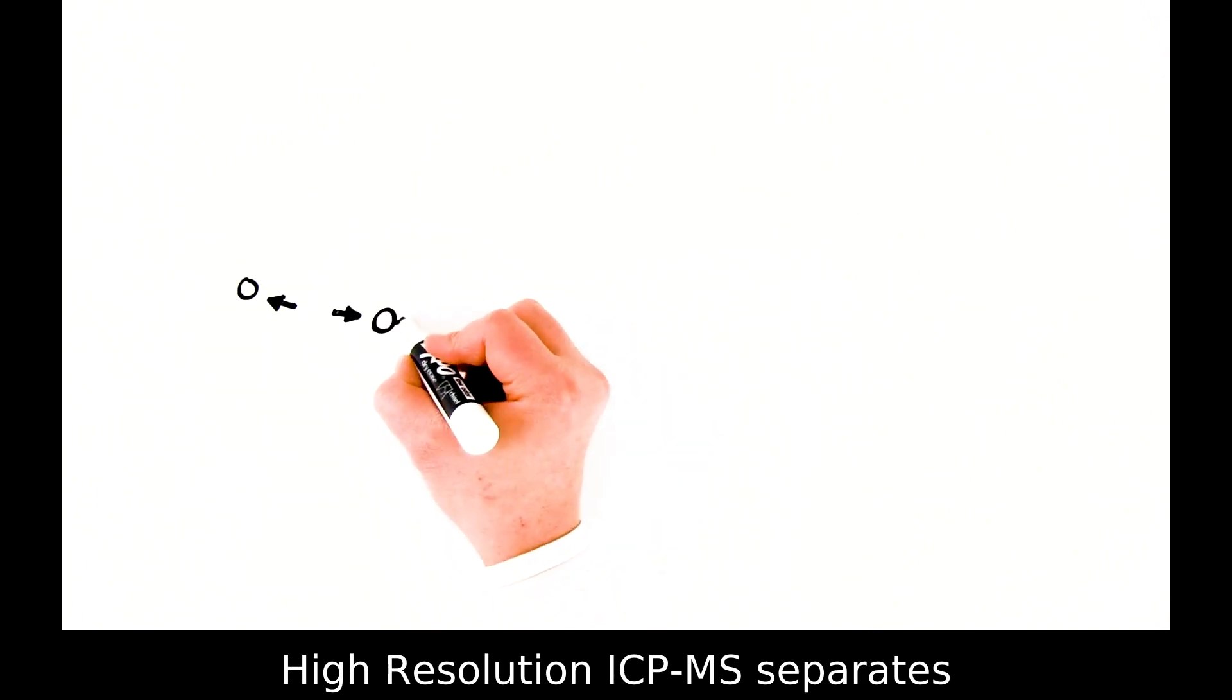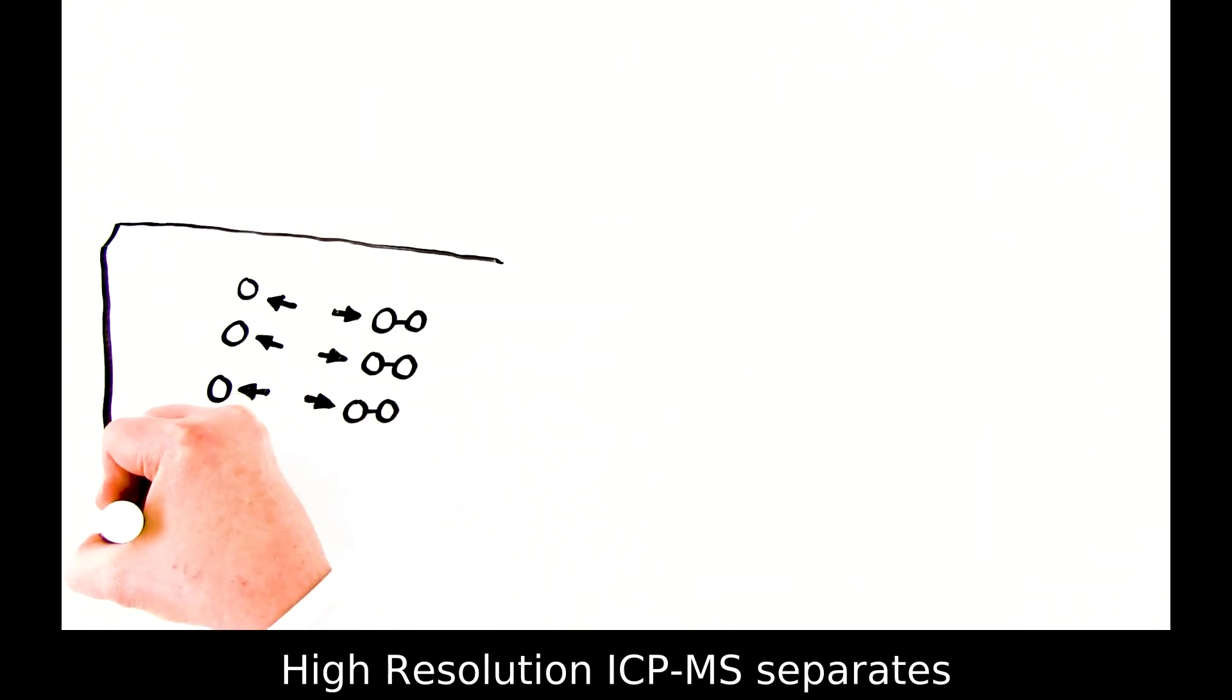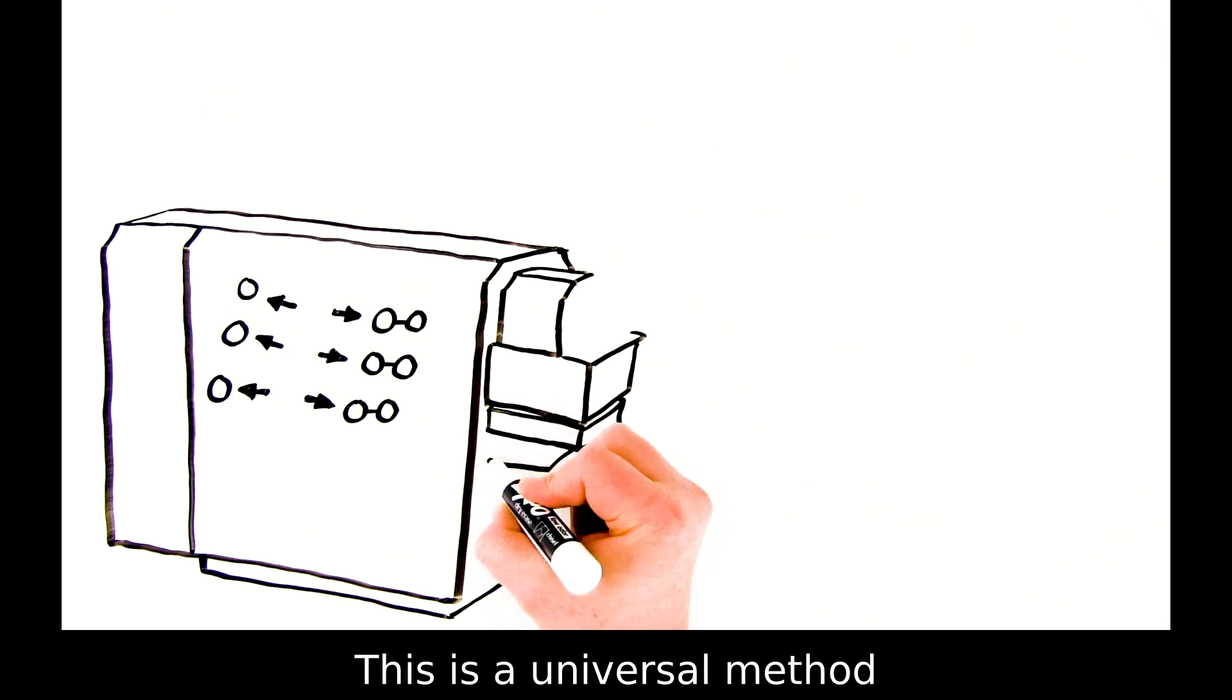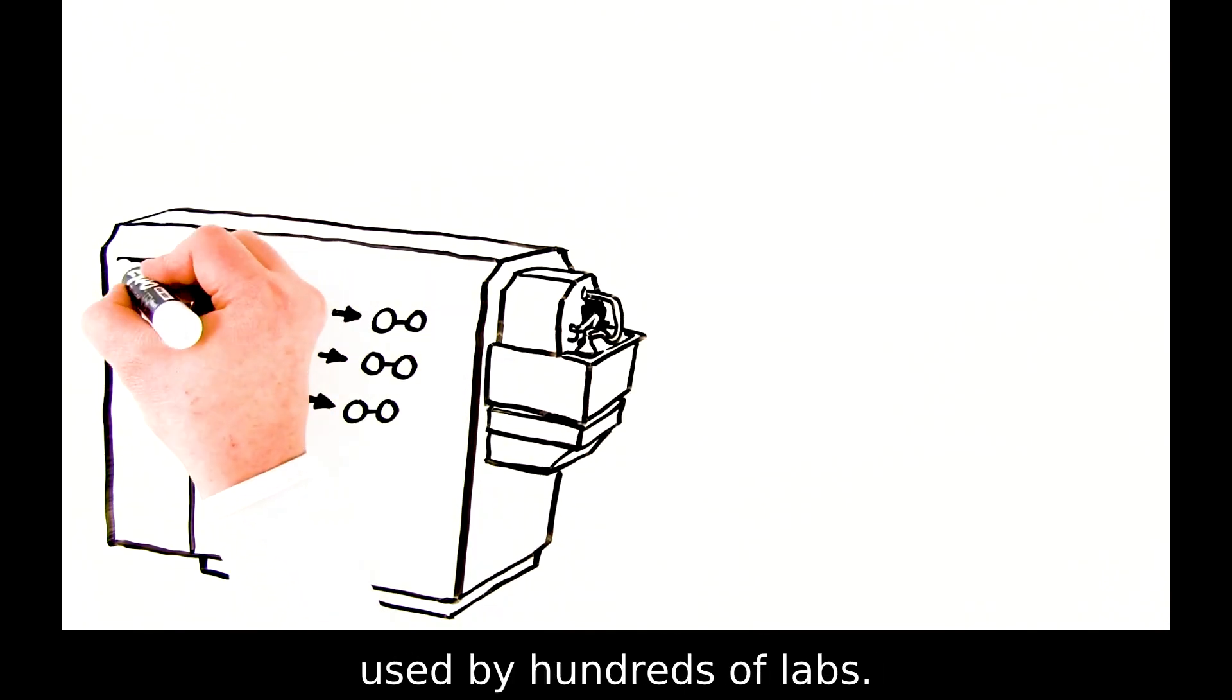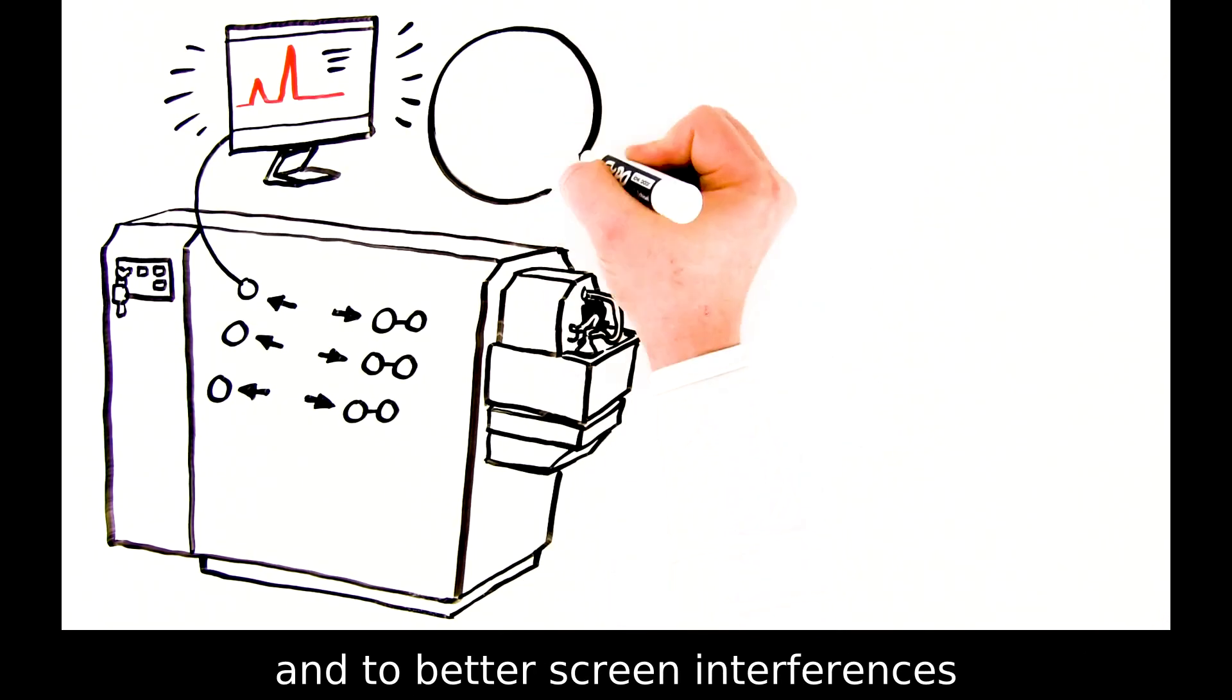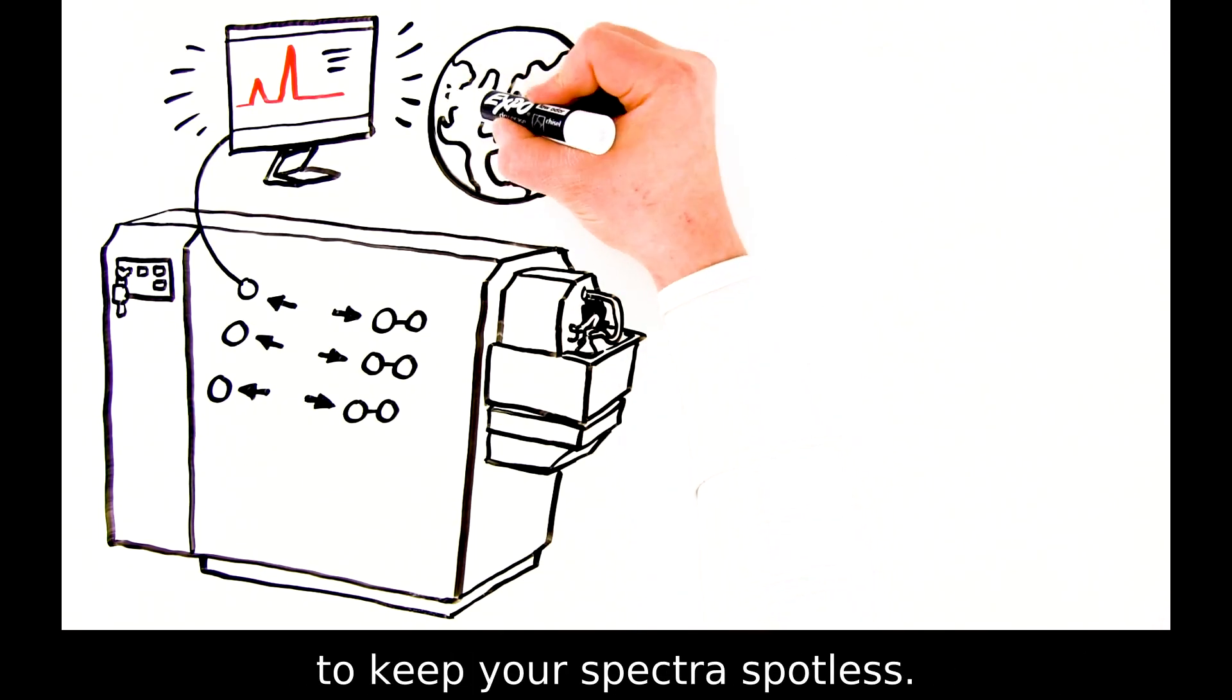How does it work? High-resolution ICP-MS separates your analyte of interest from the unwanted molecules. This is a universal method used by hundreds of labs. It allows us to get a clearer picture of your analyte and to better screen interferences to keep your spectra spotless.